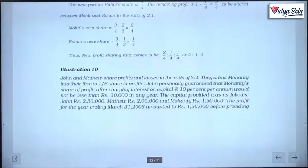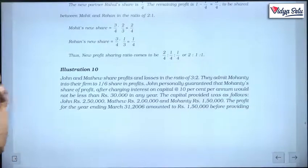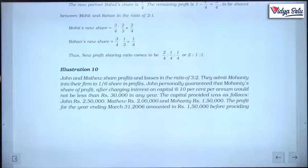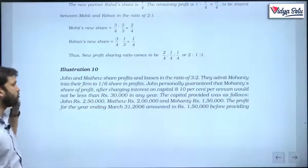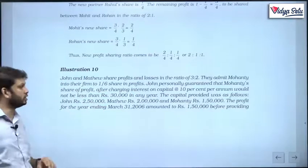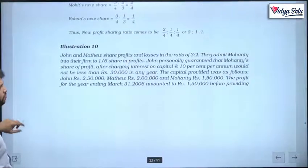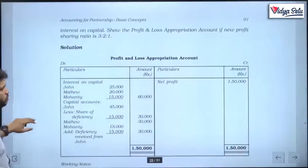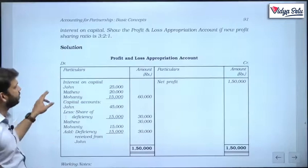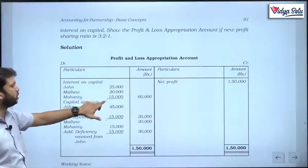Next illustration: John and Matthew share profits and losses in the ratio 3:2. They admit Mohanti into their firm for a 1/6 share in profits. John personally guaranteed — not Matthew — that Mohanti's share of profit, after charging interest on capital at 10% per annum, would not be less than 30,000 a year. The capitals were: John 2,50,000; Matthew 2,00,000; Mohanti 1,50,000. The profit was 1,50,000 before interest on capital. Interest on capital at 10%: John 25,000, Matthew 20,000, Mohanti 15,000 — totalling 60,000.